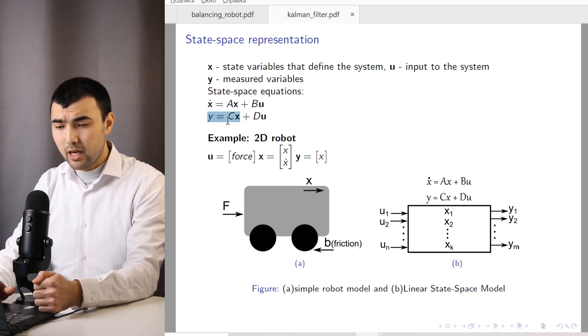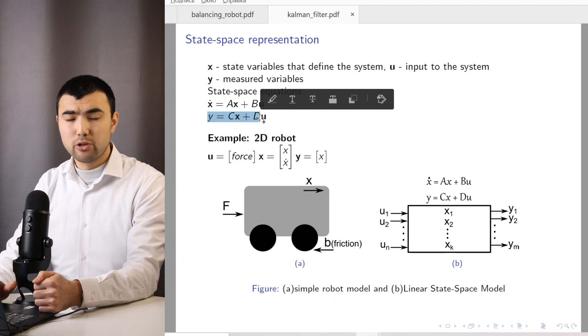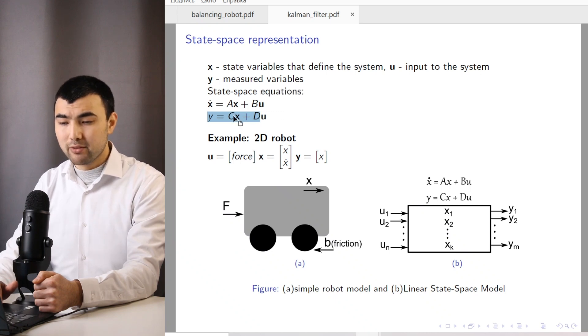In the second equation, we have Y, which is the measured variables, equals CX plus DU. So this matrix D is usually zero, so we have this matrix C that shows the relation between the measured variables and state variables.